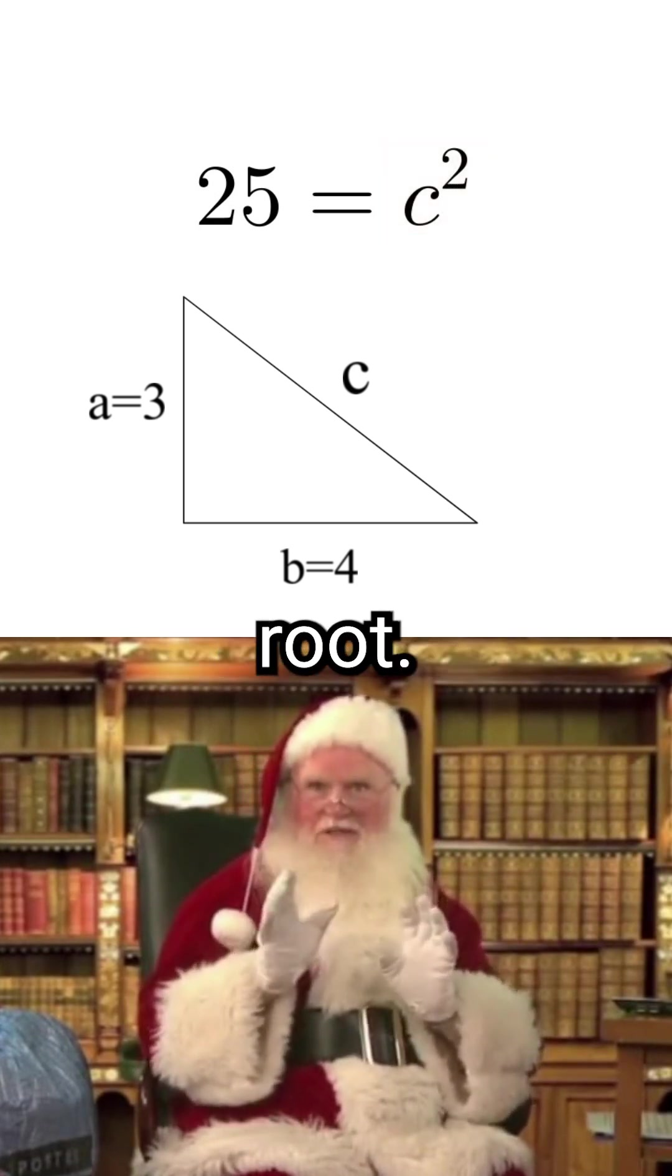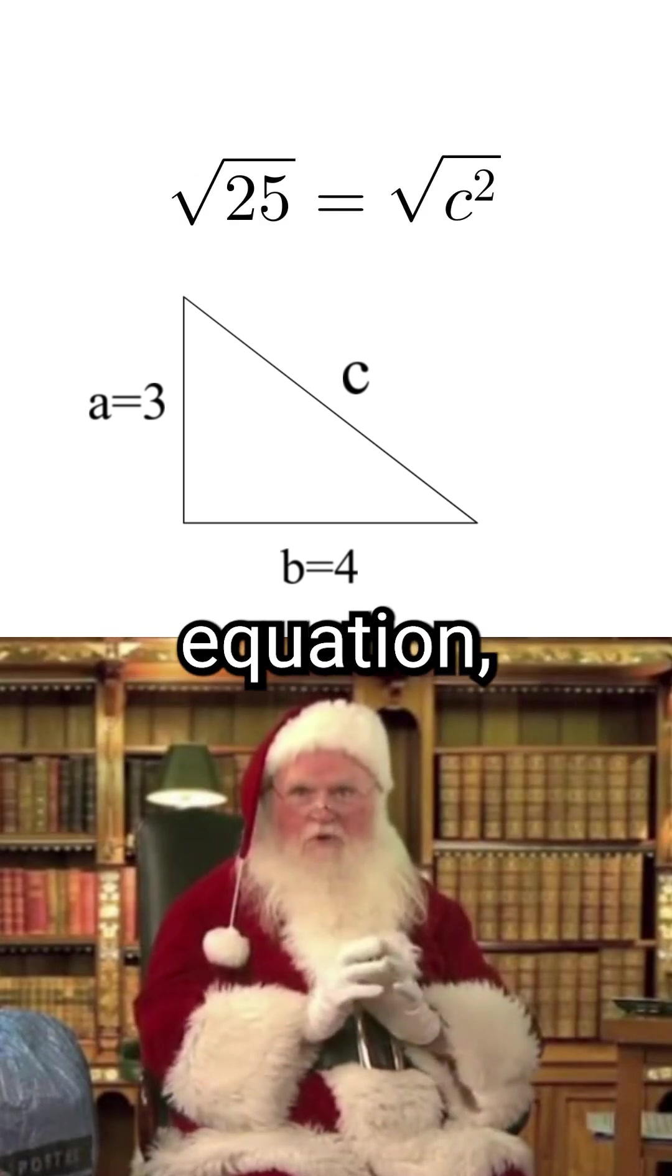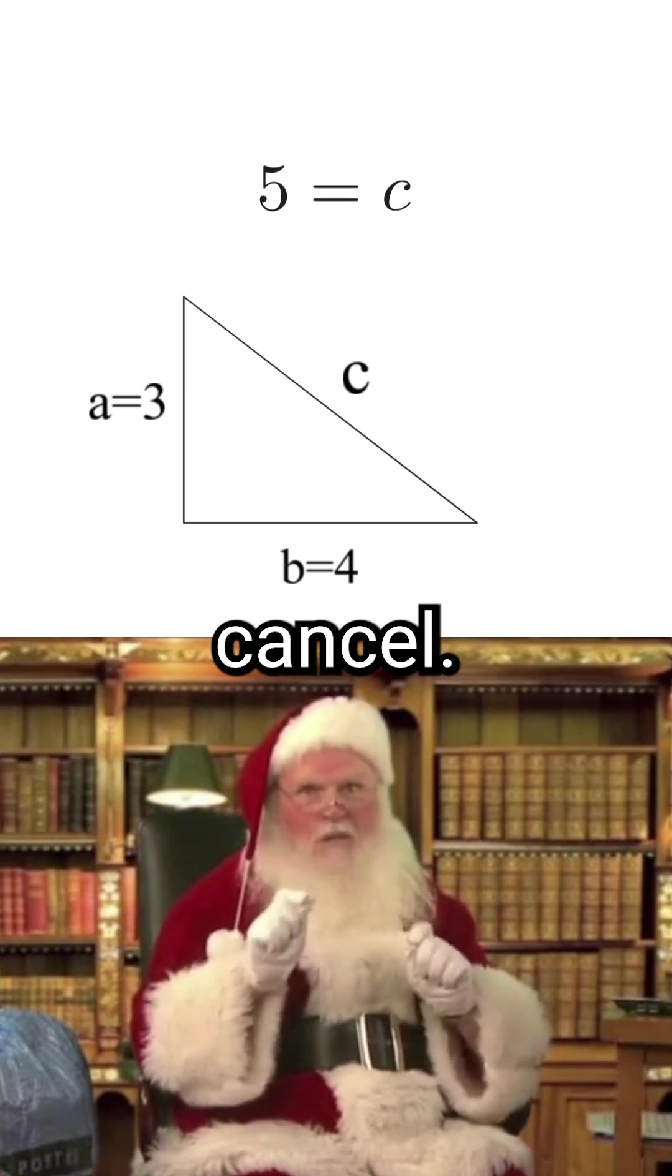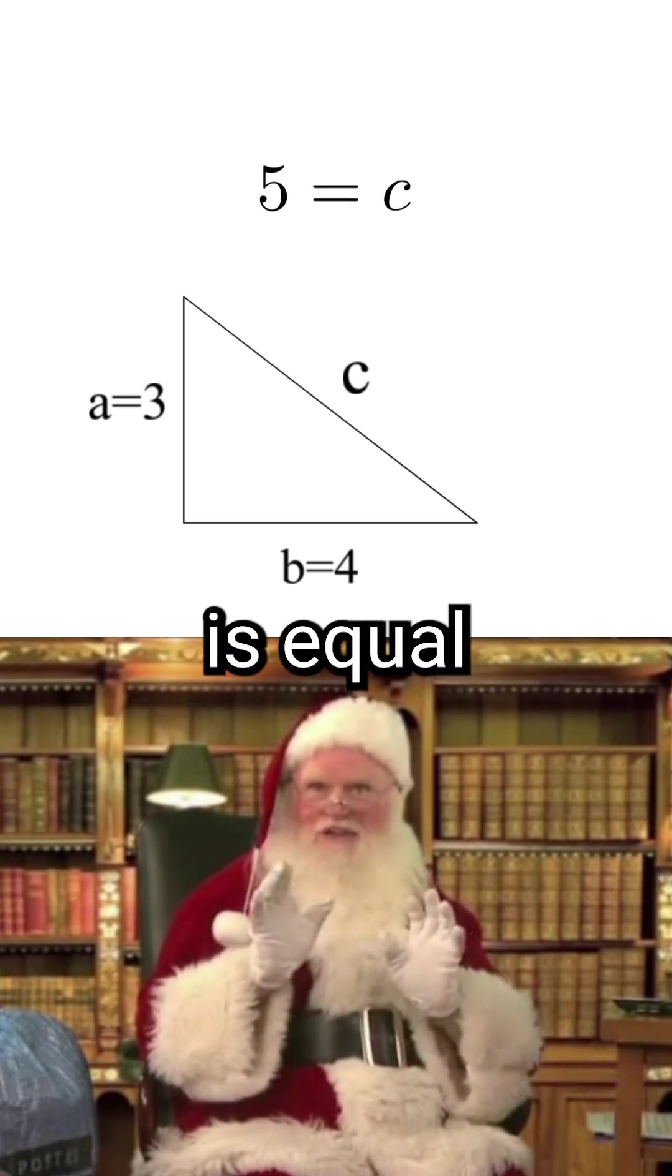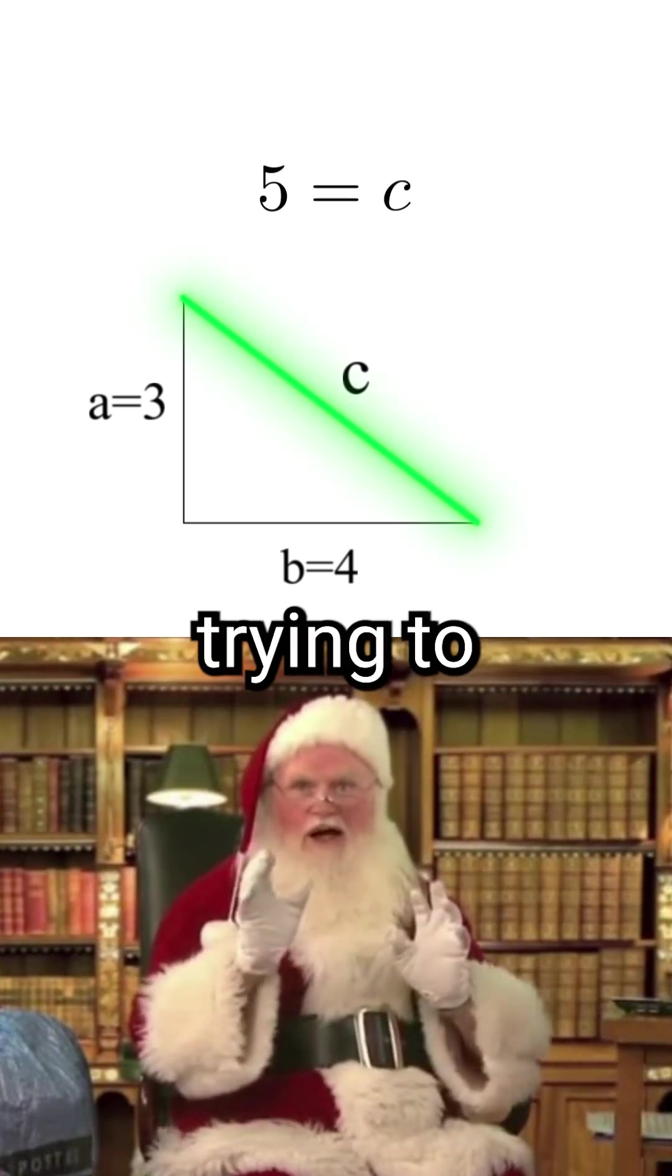So to undo the exponent, we just square root both sides of the equation. The exponent and the square root cancel, and now we can see c is equal to five. So the original side length we were trying to find is five.